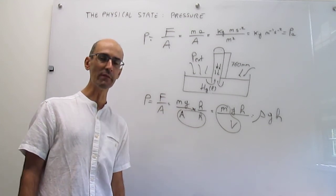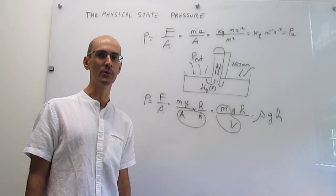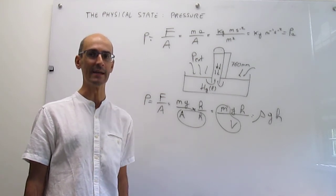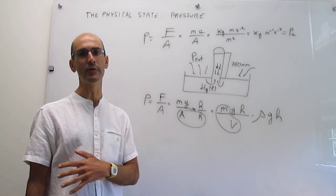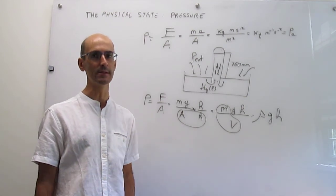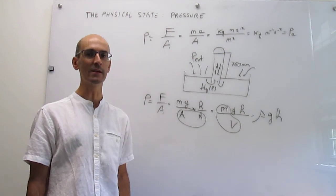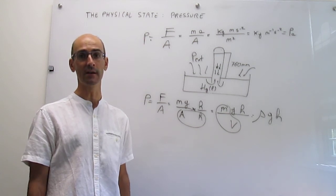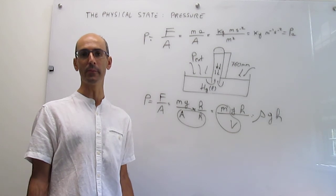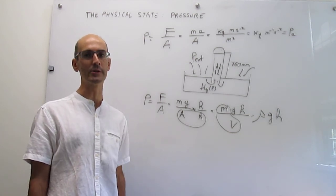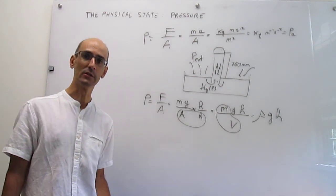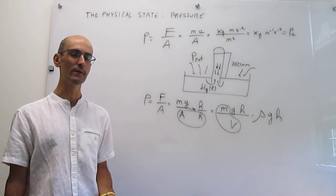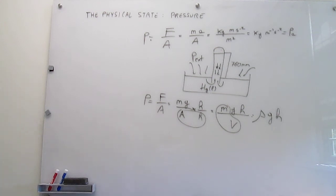Let's wrap up this video on pressure. Pressure is one of the variables you need to specify to define the physical state of a sample. We have seen the units of pressure, which in the SI system are Pascal, and ways to convert between SI units and other types of units. We've talked about atmospheric pressure and the concept of mechanical equilibrium, and we wrapped up by introducing the concept of hydrostatic pressure, which will appear in problems dealing with things like osmotic pressure. In the next video, we're going to be talking about the concept of temperature, which is the last variable that we need to define the physical state.